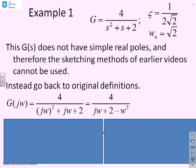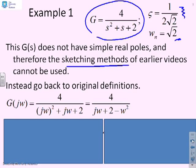Here's an example. We've got G equals 4 over s squared plus s plus 2, with an underdamped denominator. The damping ratio is 1 over 2 root 2, natural frequency root 2. Because this G(s) does not have simple real poles, the sketching methods we used in earlier videos cannot be used.